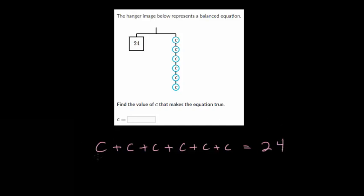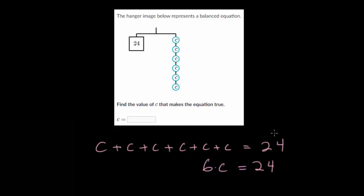Since we're adding the same variable multiple times, we can rewrite it as multiplication. We have six of them, so we write it as 6c, because six times c means six of them added together — multiplication is just repeated addition. So 6c equals 24, and now we just need to solve for c.